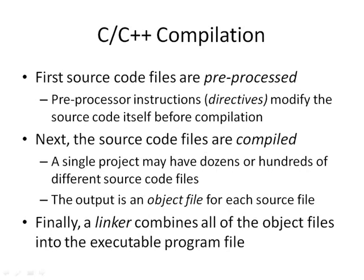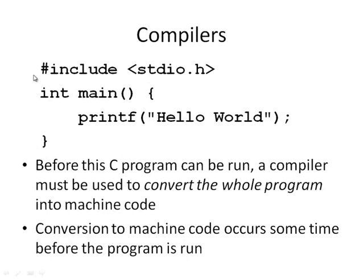Compilation for C or C++ takes place in a number of stages. First, source code files are pre-processed — there's a wide range of pre-processor instructions, directives that allow the source code to modify itself before it's compiled. The hash include statement is operated on by the pre-processor: it tells it to take the contents of the file stdio.h and add that to the source code file before compiling, because the printf function exists inside the stdio library. So it copies that source code into this file before compiling.